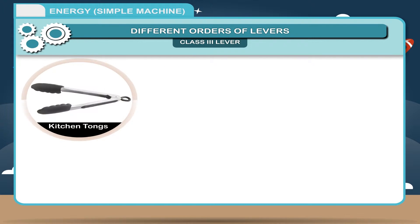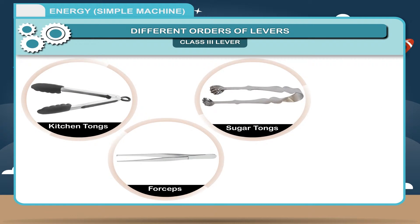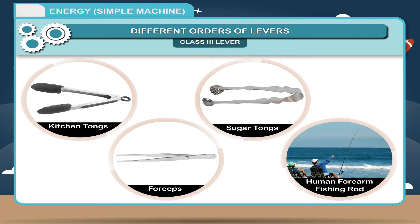Examples: Kitchen tongs, forceps, sugar tongs and human forearm, fishing rod, etc. are the examples of class 3 lever.